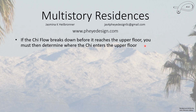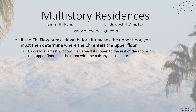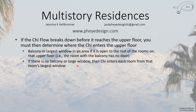If the chi flow breaks down before it reaches the upper floor, then you must determine where the chi enters the upper floor, and this can be a little tricky. If you happen to have a balcony or a large operable window in an area that is open to the rest of the rooms — open to the staircase and a hall leading to other rooms — then that can become a chi source. If there is no balcony or large window, then chi enters each room from that room's largest window, and the larger the window, the better the chi flow.